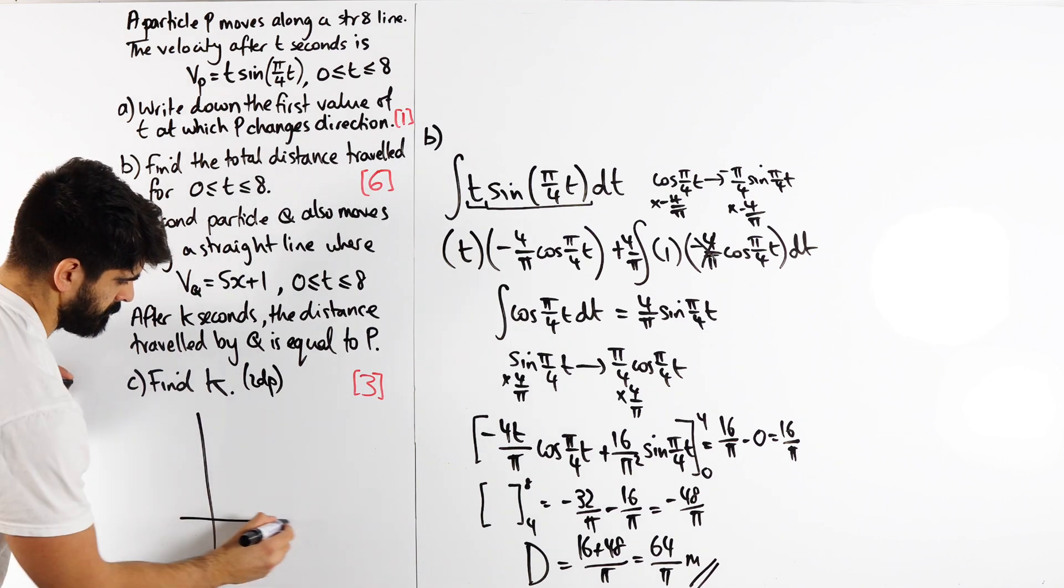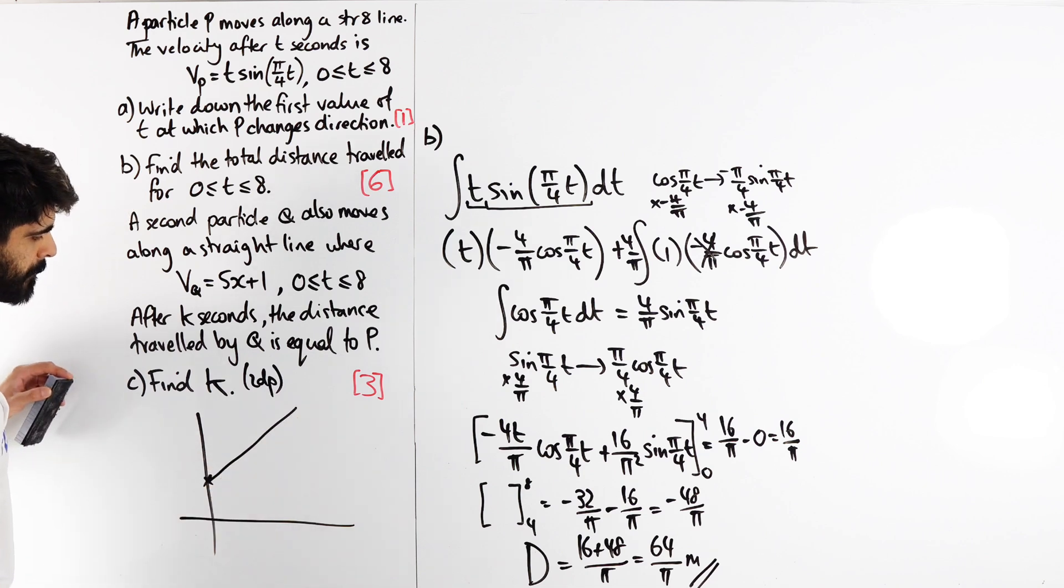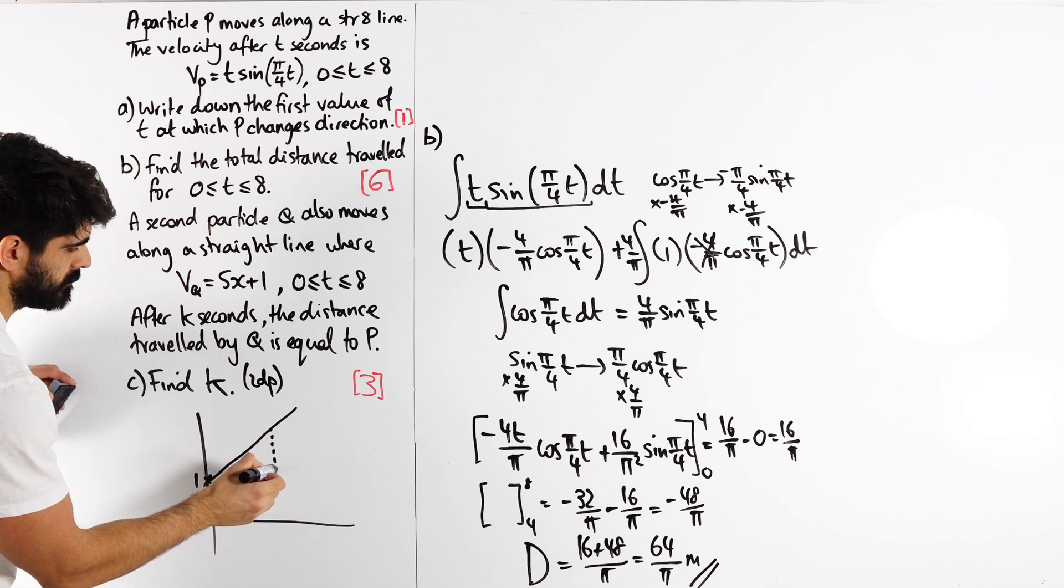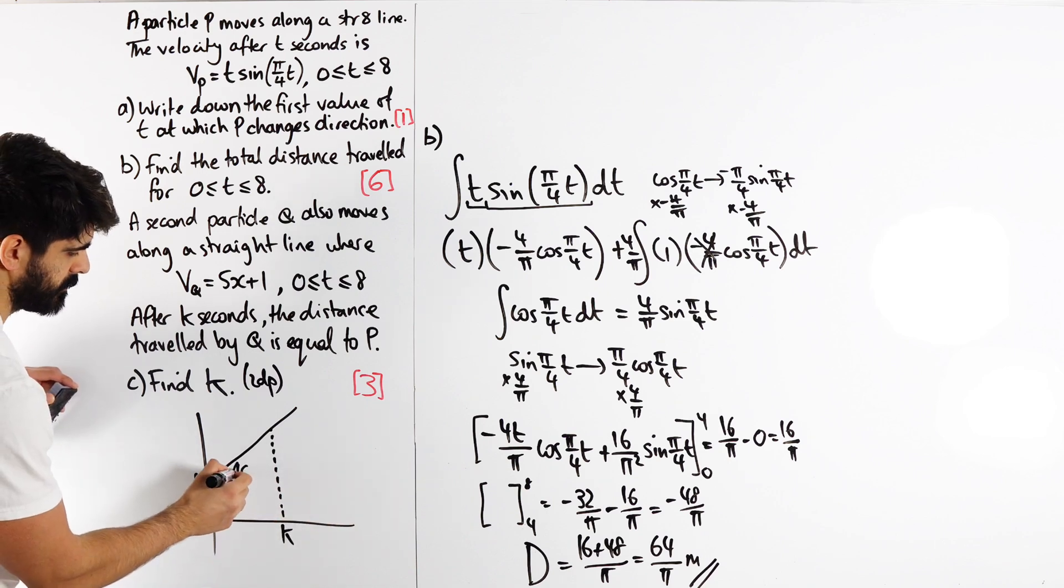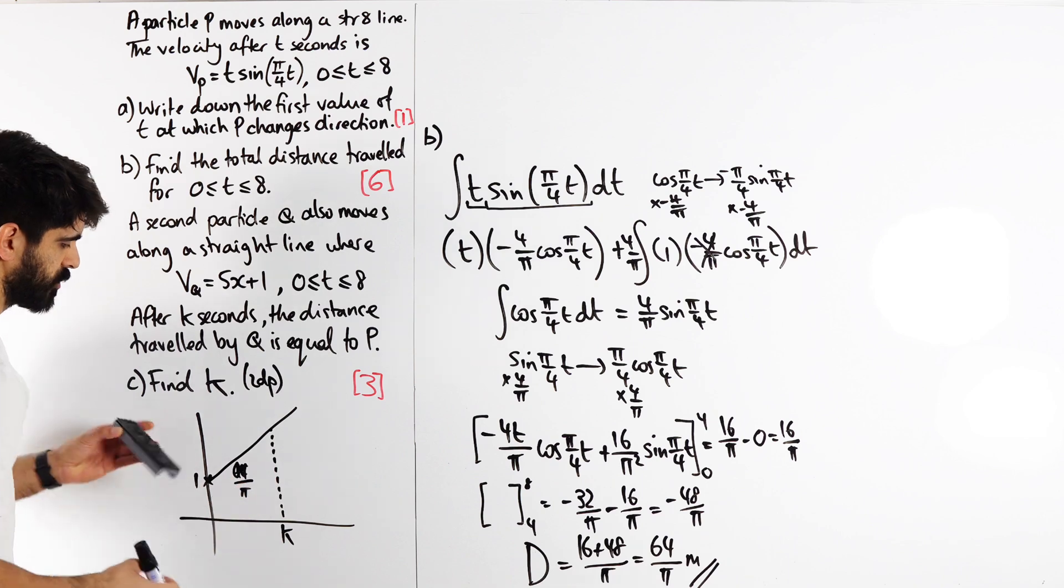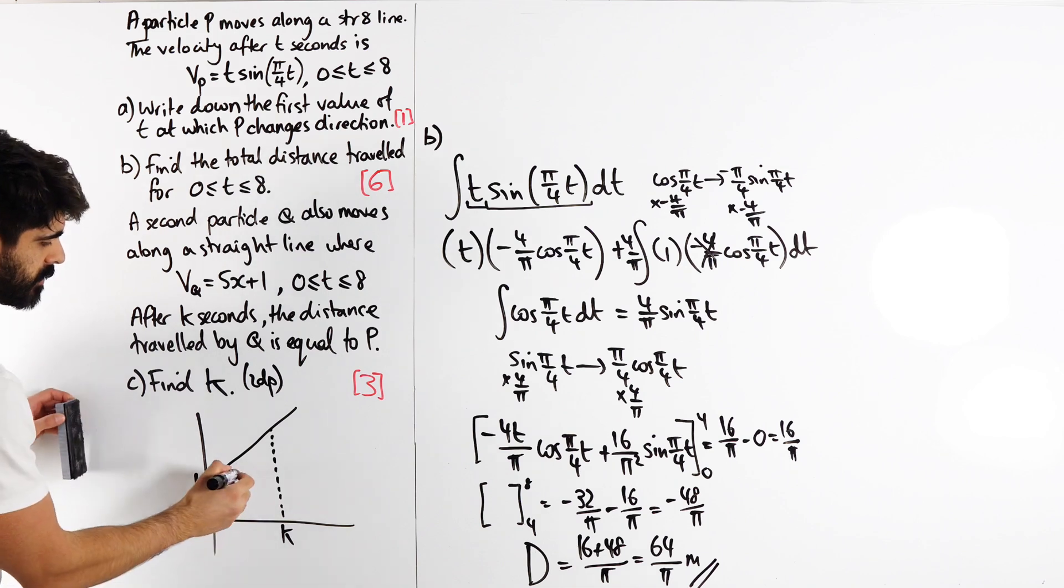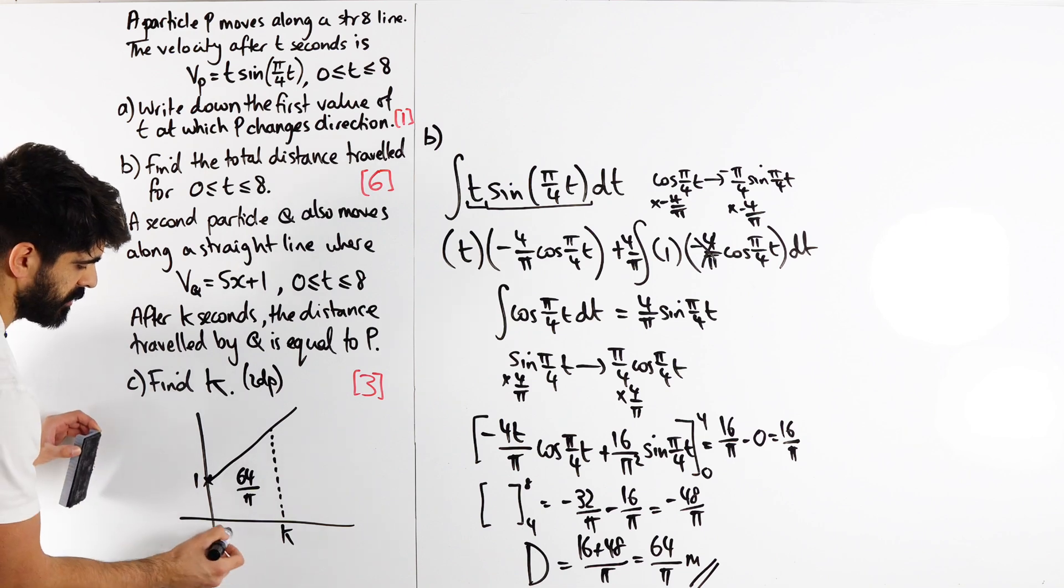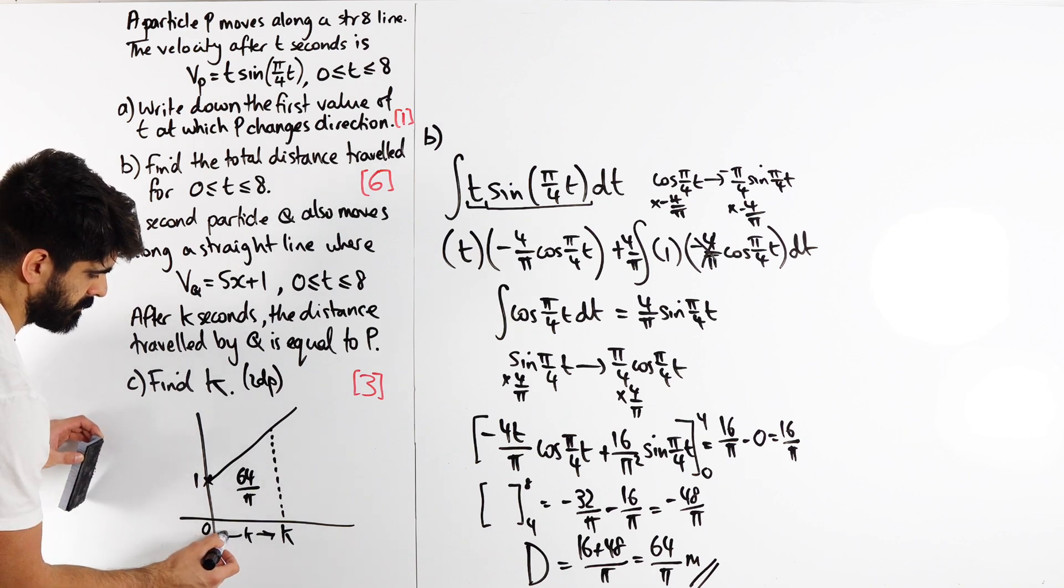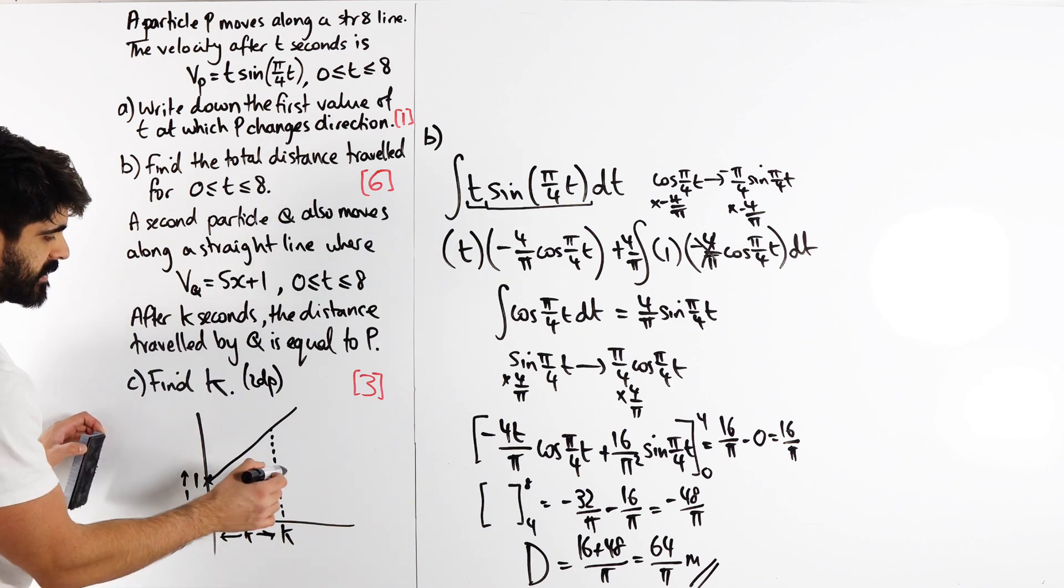Let me do the sketch here. 5t plus 1 crosses here at 1, has gradient 5. That's between 0 and 8. I want to know at what point k would this area be 64/π. Obviously you can integrate the graph between 0 and k, or I think it's actually nice to just think about the trapezium.